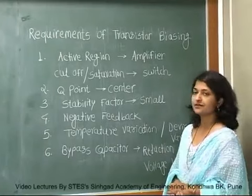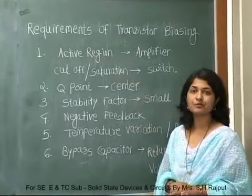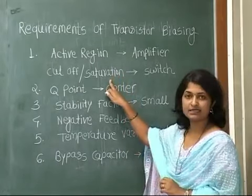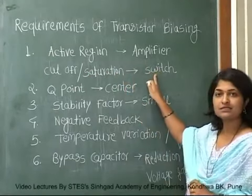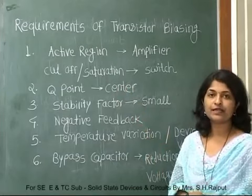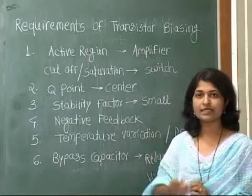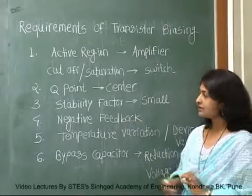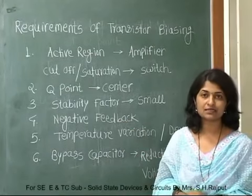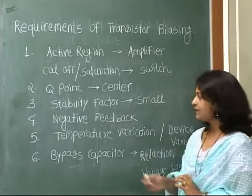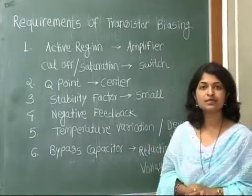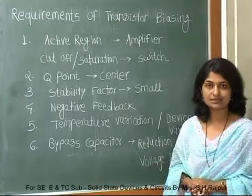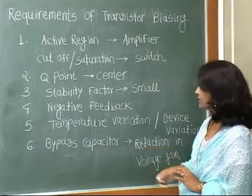The transistor biasing circuit is required to satisfy the following requirements. First, the transistor should be properly biased in the active region so that it can act as an amplifier. Second, the Q point position must be at the center of the DC load line so that the transistor can act like an amplifier. Third, the stability factor must be as small as possible. Fourth, negative feedback must be introduced to provide proper stability of the Q point. Fifth, temperature variation and device variation must be avoided. And lastly, a bypass capacitor must be provided to avoid reduction in the voltage gain of the transistor.